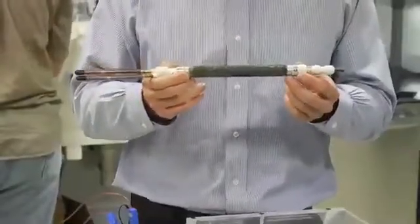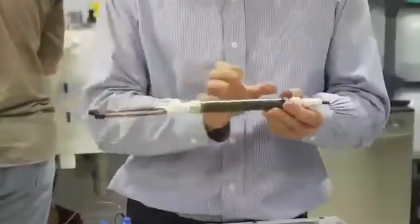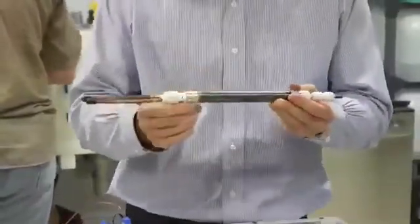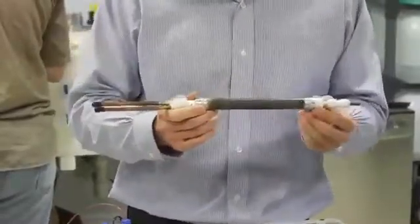This is the regenerator. It holds the magnetocaloric material. It allows us to, one, put it in field, and two, pass fluid through it. And the fluid is what we use to remove the heat and deliver the heat to the refrigerator in the opposite direction.